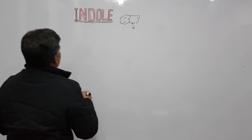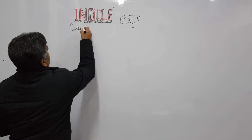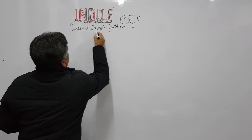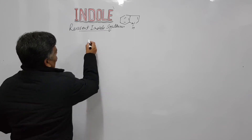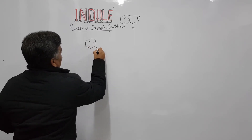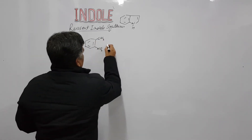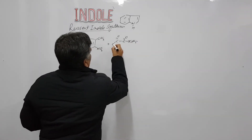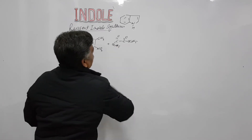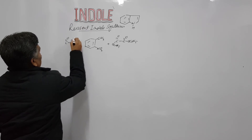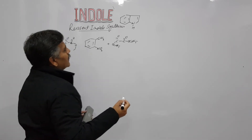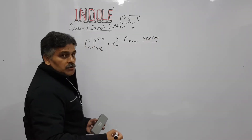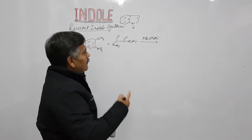The second method used for the preparation of indole is another named reaction — the Reissert indole synthesis. In Reissert indole synthesis, the starting materials are o-nitrotoluene, which reacts with diethyl oxalate (EtO-CO-CO-OEt) in the presence of sodium ethoxide (NaOEt). Sodium ethoxide is an example of a strong base.